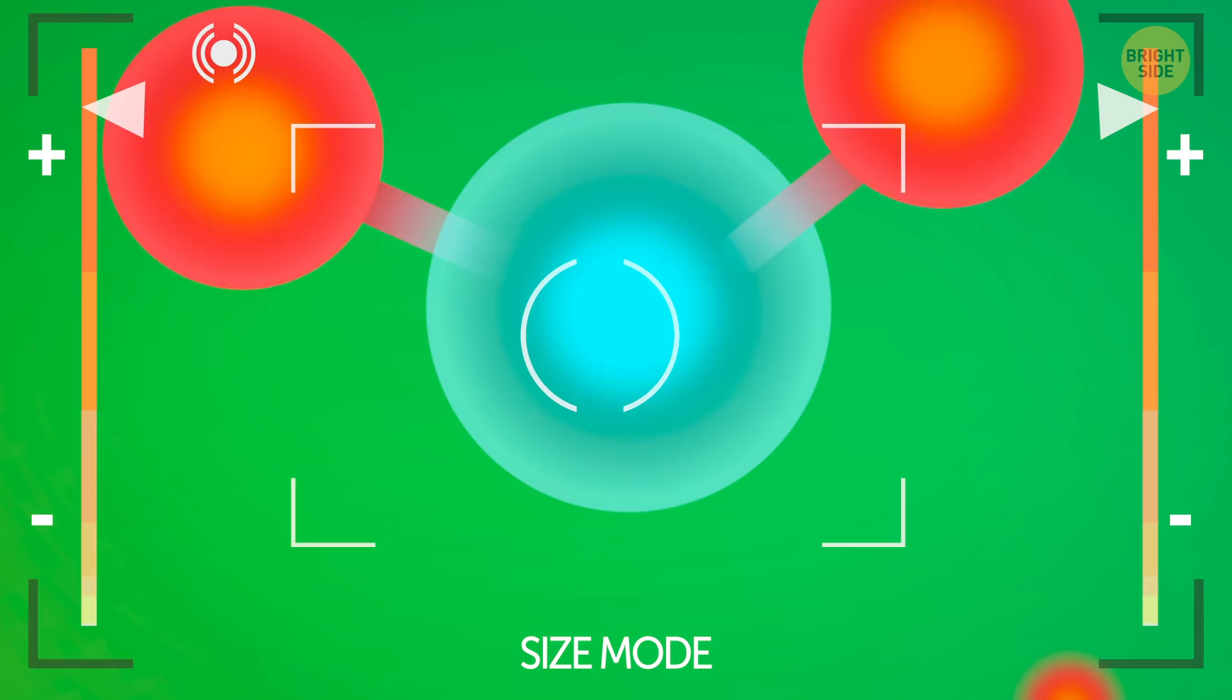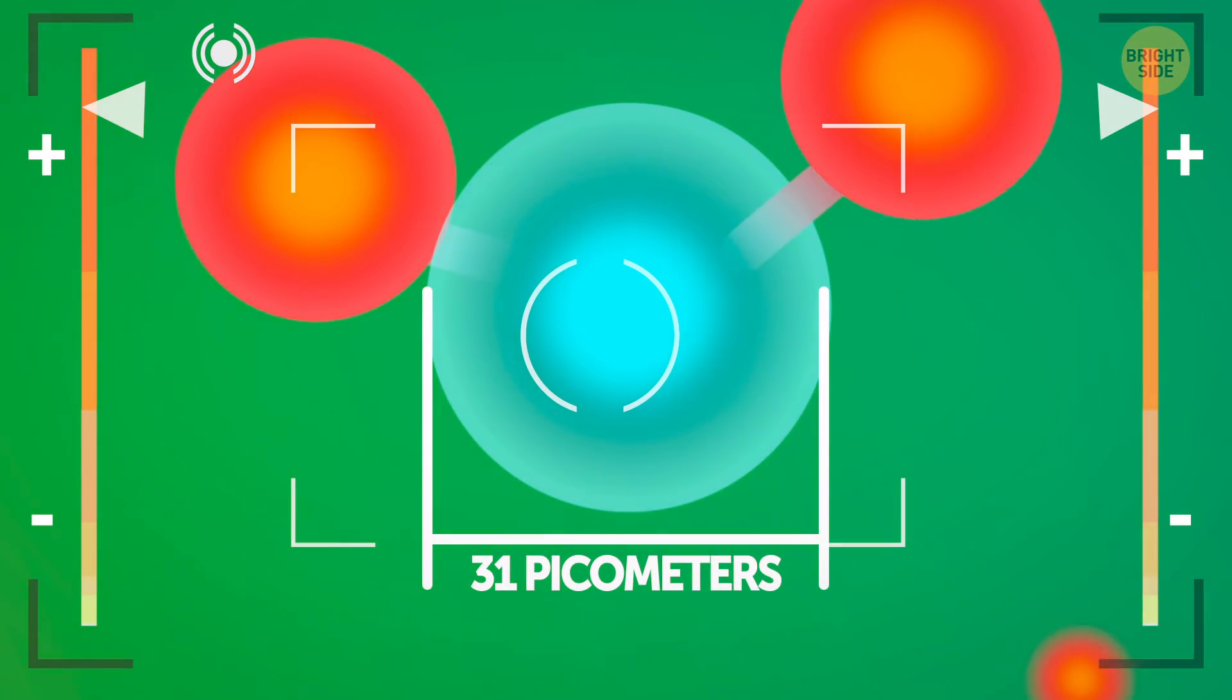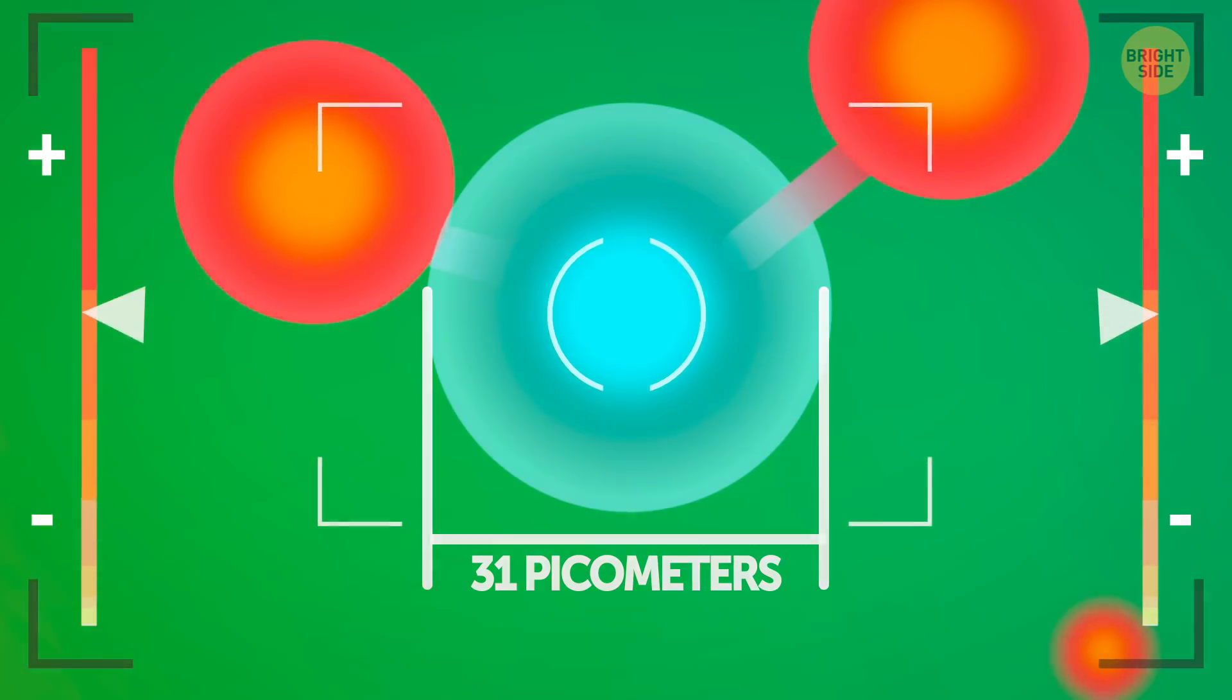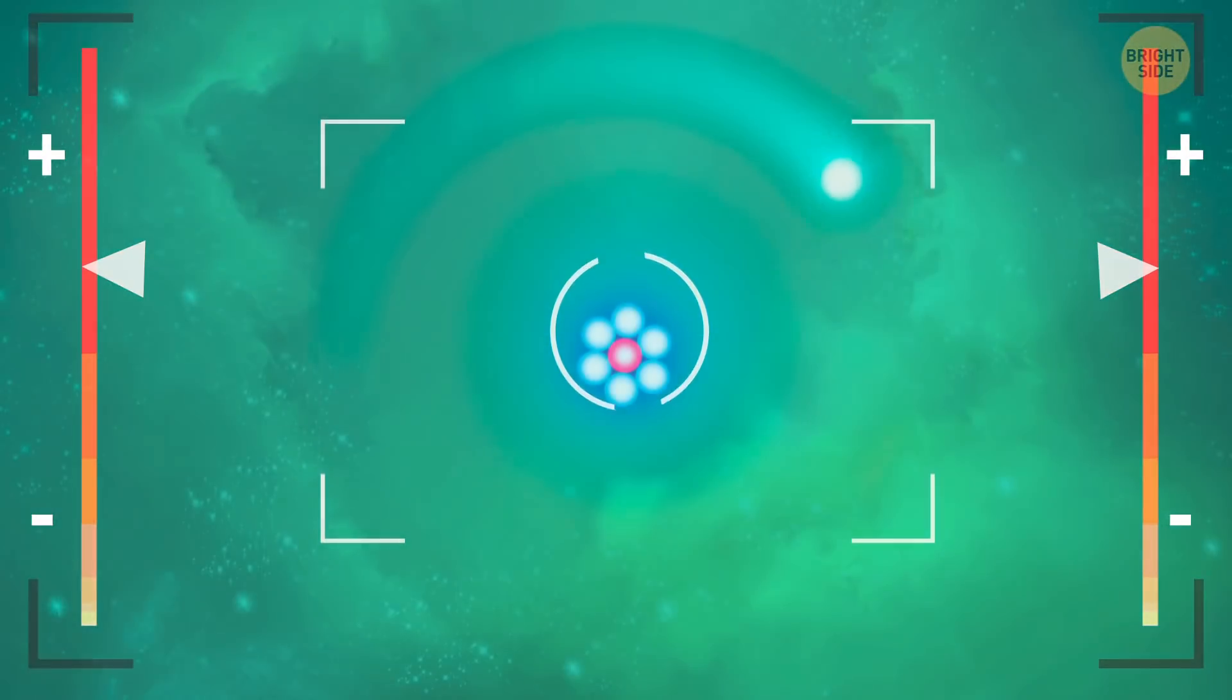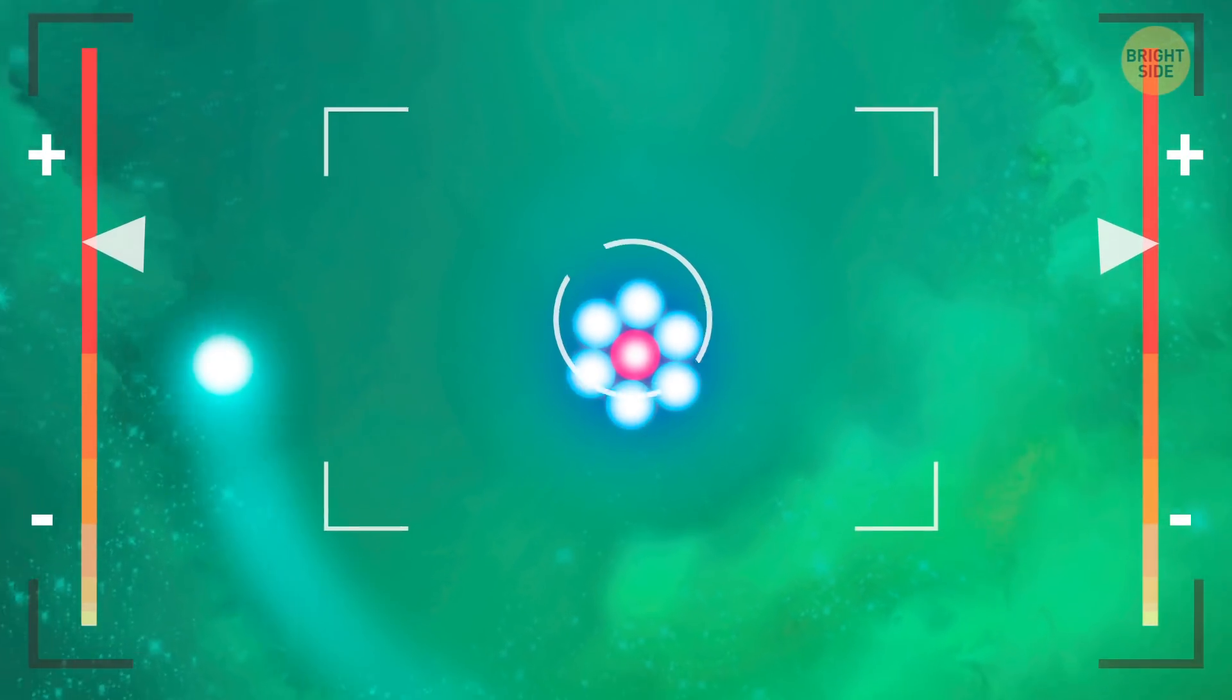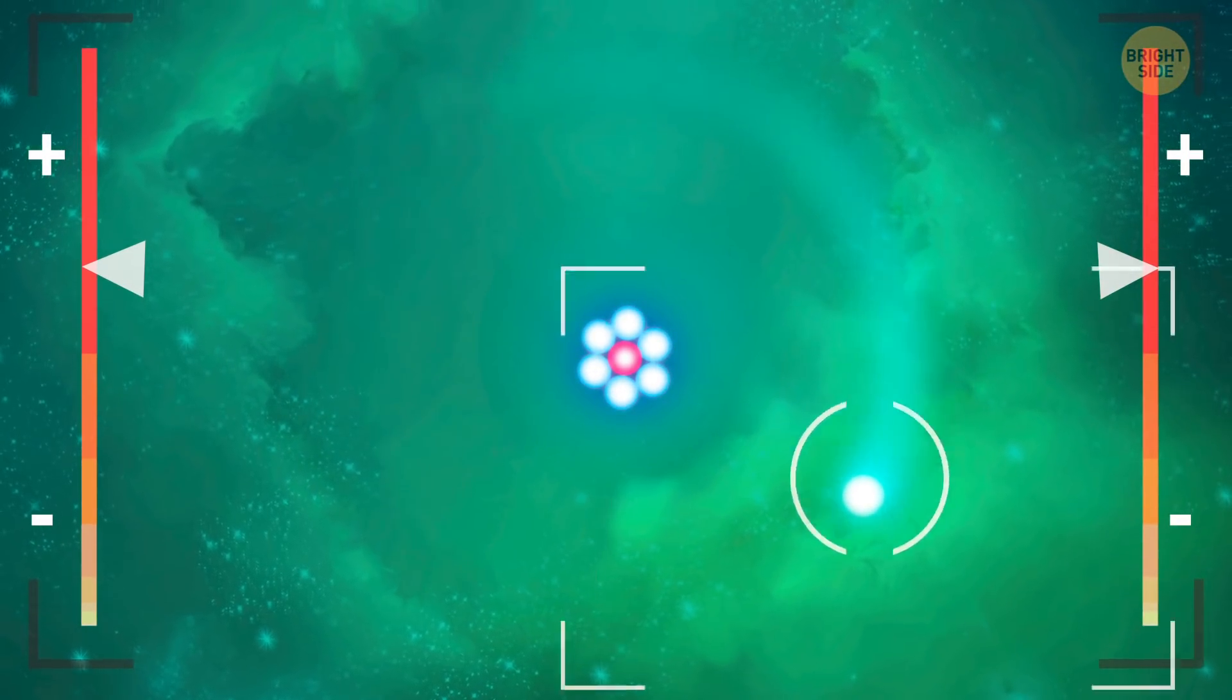Hydrogen atoms, in their turn, are just 31 picometers in diameter, and they're the most frequently met atoms in the world. They consist of just two elements, one positively charged proton and one negatively charged electron orbiting around it.